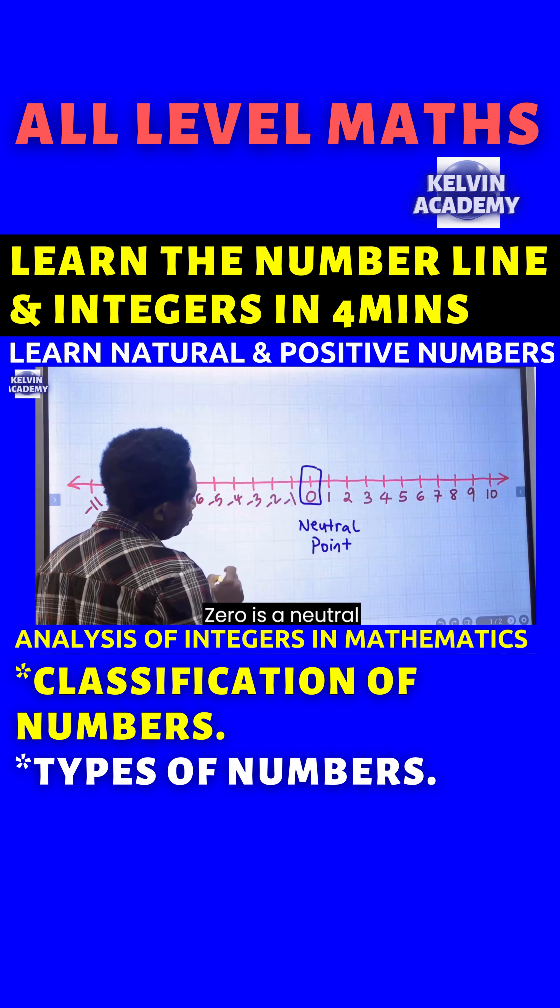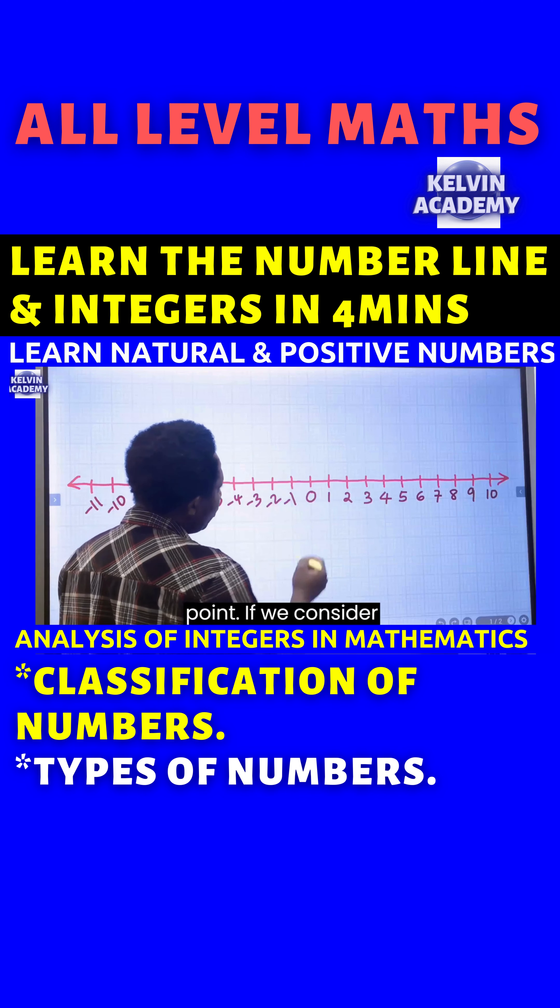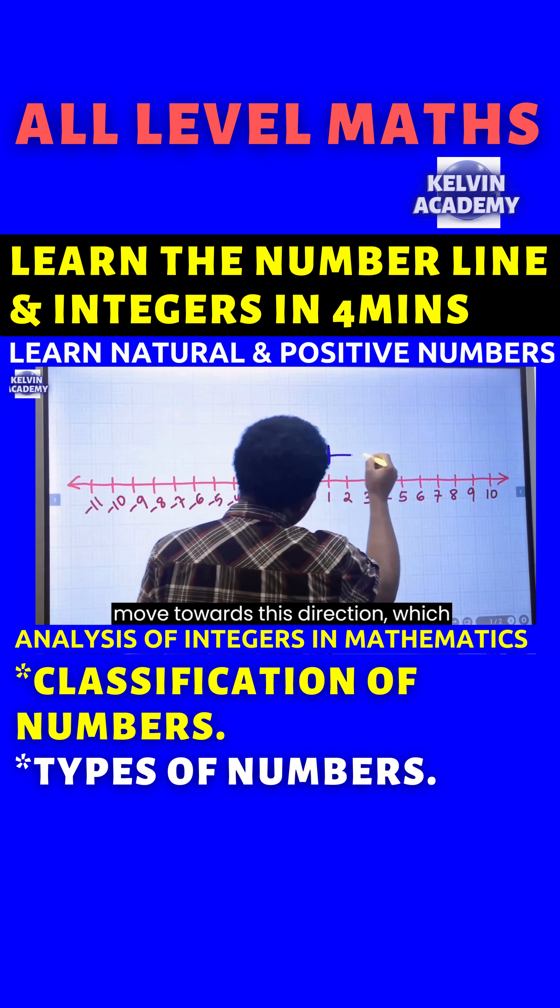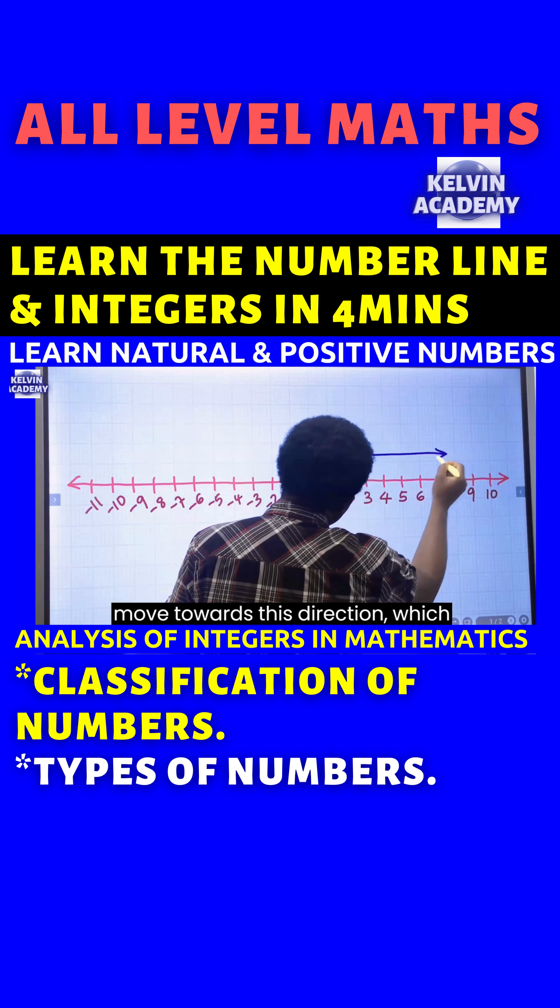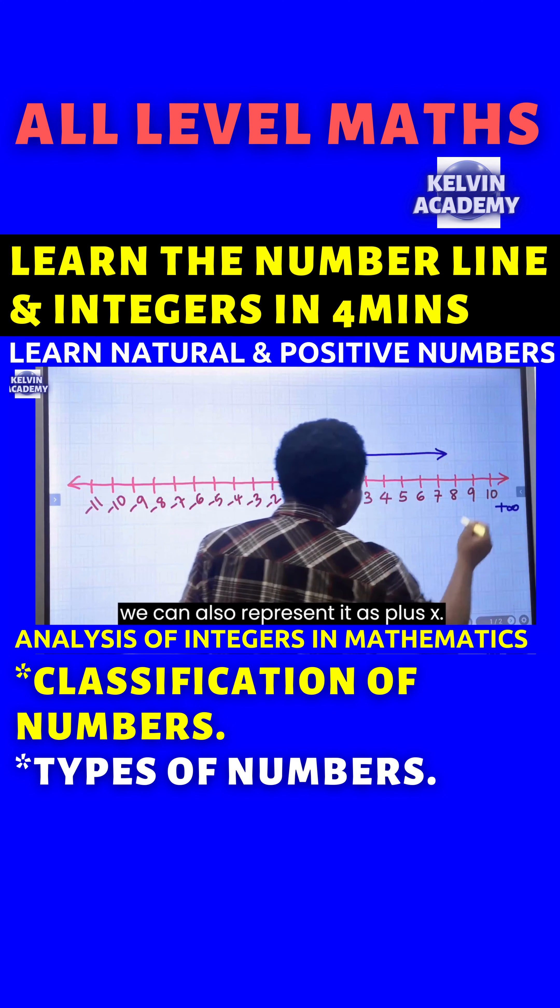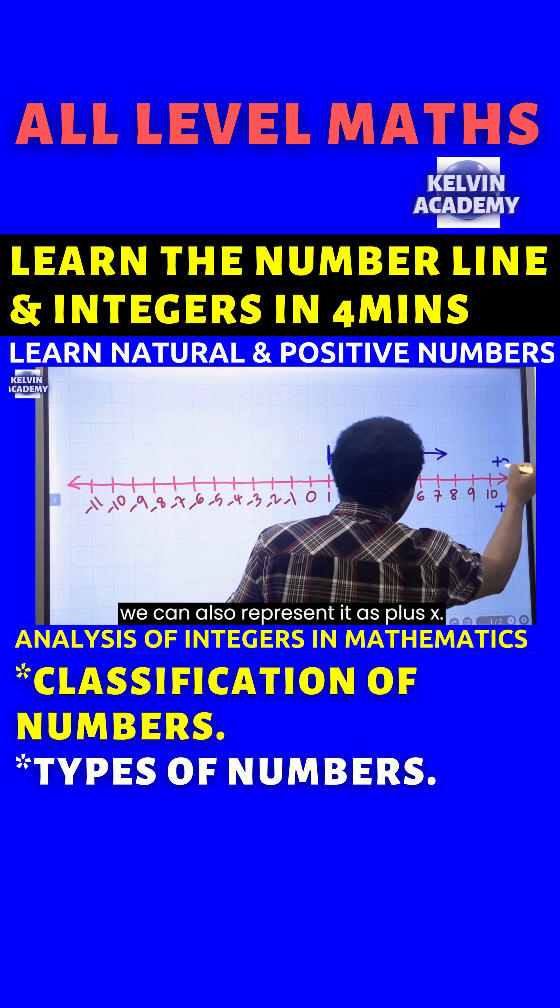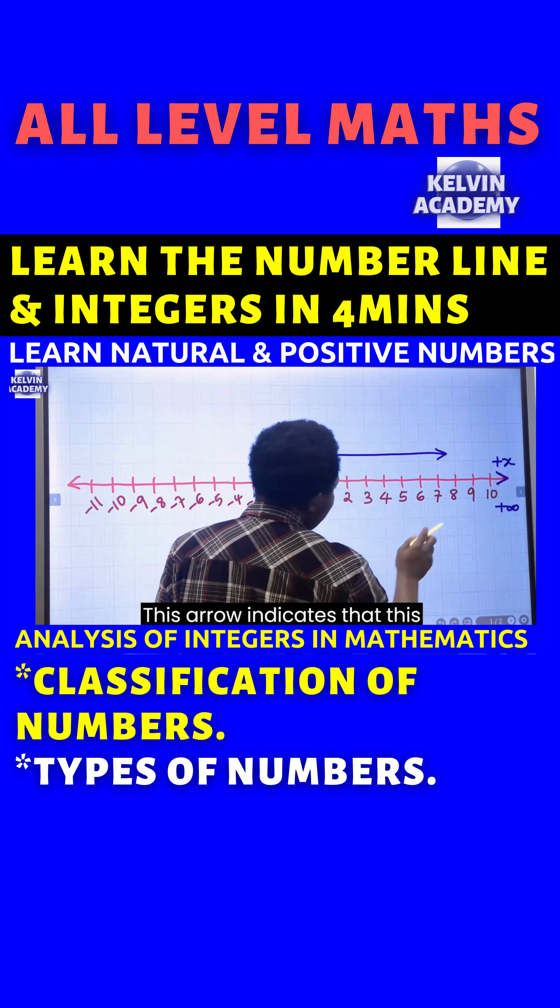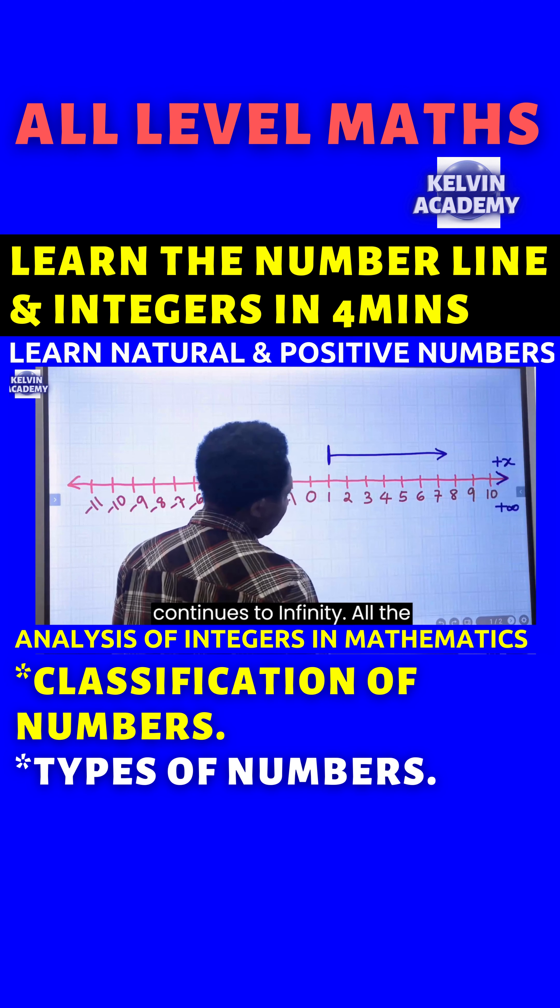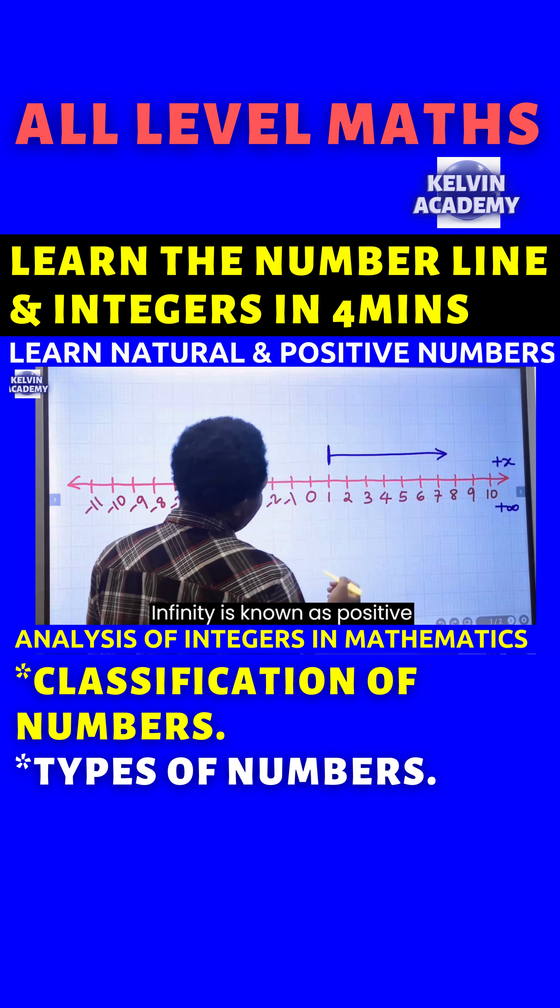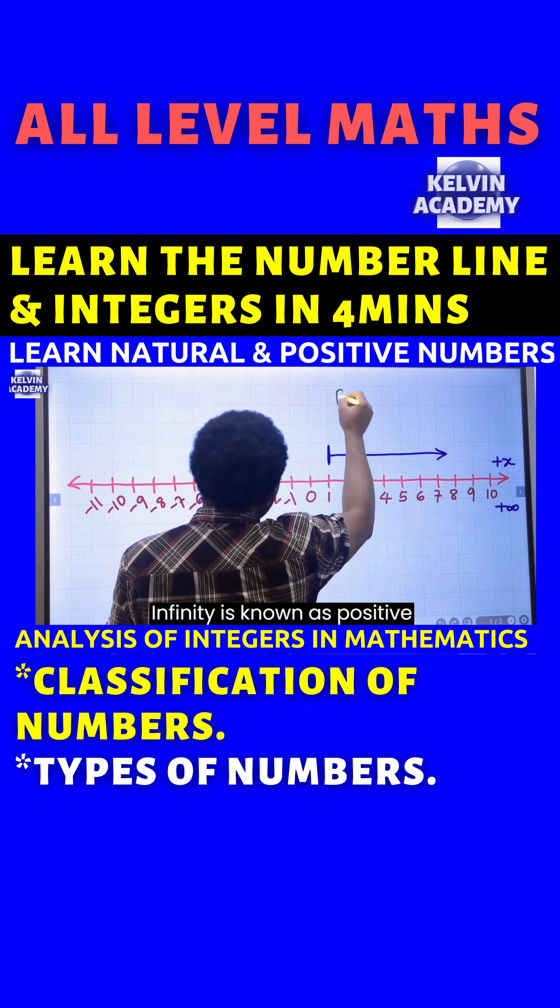0 is a neutral point. If we consider counting from 1 and move towards this direction, which is towards the positive infinity, we can also represent it as plus x. This arrow indicates that this continues to infinity. All the numbers from 1 to infinity is known as positive numbers.